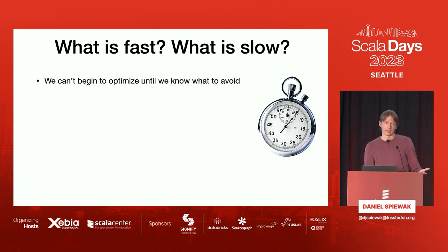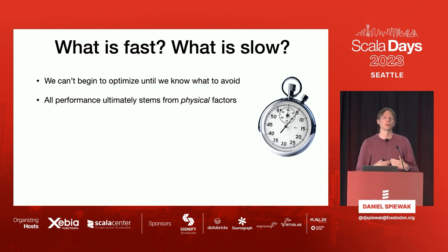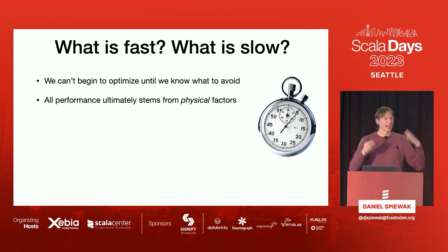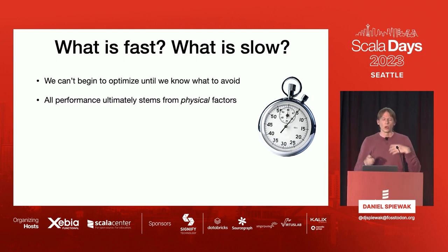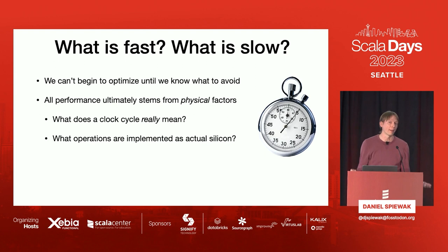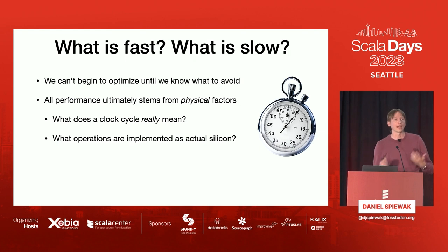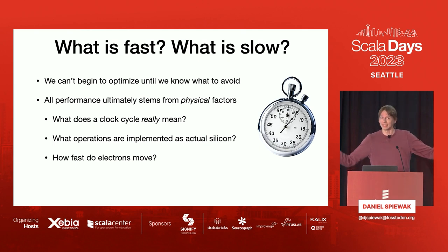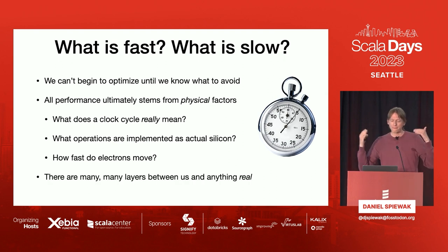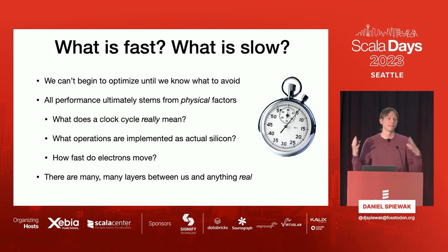Fundamentally, all performance — or lack thereof — stems from physical factors. It's easy to forget with your TikToks and your AWSs, but there's actual physical hardware under the surface. What does a clock cycle mean? What operations are implemented in silicon versus emulated in the operating system? How fast do electrons move? These are questions that actually matter when optimizing at this level. There are many, many layers of abstraction and hardware between us and anything physically tangible.